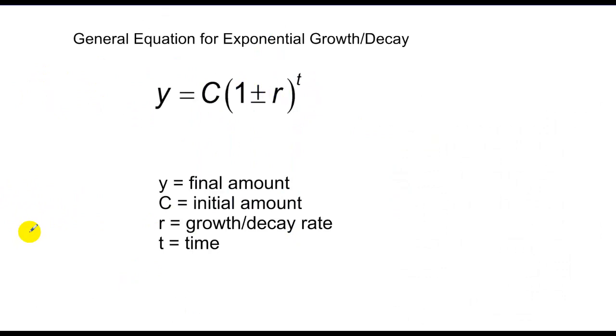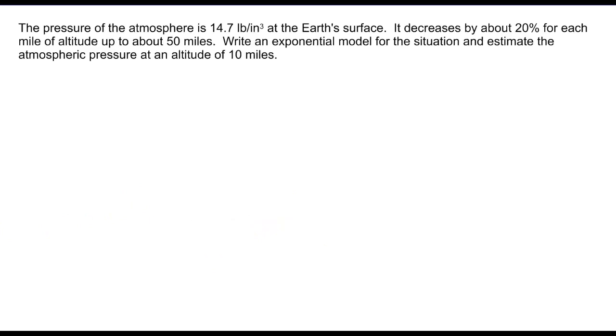Now, within these exponential growth and decays, we have a general equation as well that can be written as c times 1 plus r to the t power, where y is our final amount, c is our initial amount, and we call r our growth and decay rate, and t is time. So we're going to do some application problems involving this.